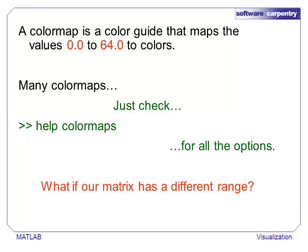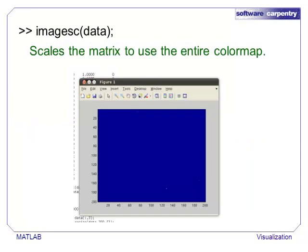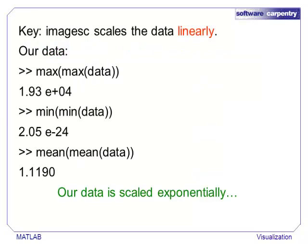An important point about image is that it expects all the values to be between 0 and 64. If the data has a different range, then it is truncated to the range 0 to 64. It is usually better to use imagesc, which rescales the values of the matrix to fit in the range 0 to 64, which ensures that the entire color map is used. Unfortunately, we still do not see an image in this data. The reason is that imagesc scales data linearly between the highest and lowest points. Our data follows an exponential distribution, which means that the largest values are a great deal larger than the average value.